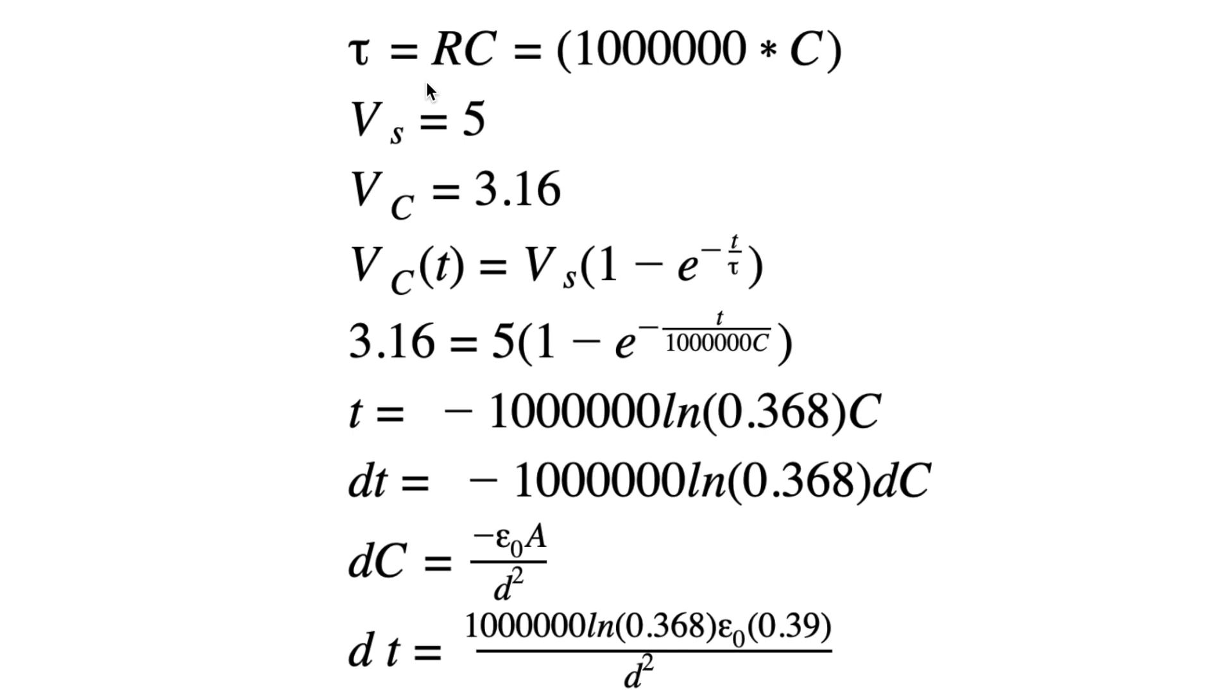The time constant is resistance times capacitance, and we have the resistance, but we don't have the capacitance. So we have the equation for time constant, and then we also have the max voltage. This is the voltage that the Arduino outputs after transmitting it, and this is the voltage of the capacitor after one time constant. And then, as I mentioned earlier, this over here is the equation used to calculate the voltage of the capacitor for a certain amount of time.